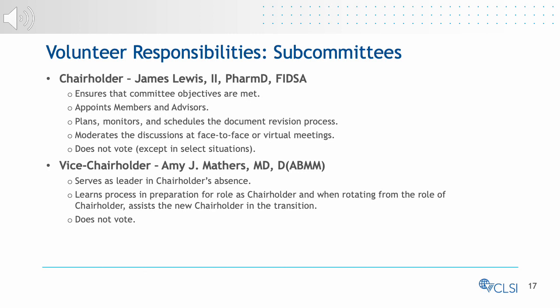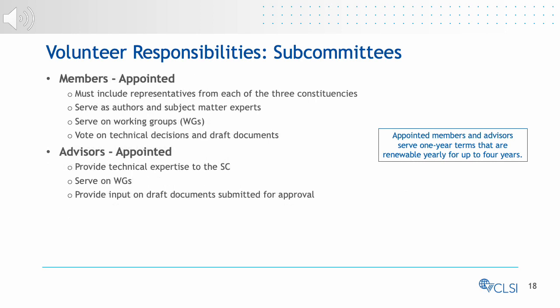Vice chairholders may serve for two years as the vice chairholder, then four as chairholder, and then serve two years as past vice chairholder. This eight-year rotation allows the chairholder to always have had experience or have an experienced vice chairholder on hand. Subcommittees are then made up of members who are appointed. They serve on working groups and vote on technical decisions and draft documents. Advisors who are also appointed cannot vote but provide technical expertise. Both members and advisors serve one-year terms for up to four years.